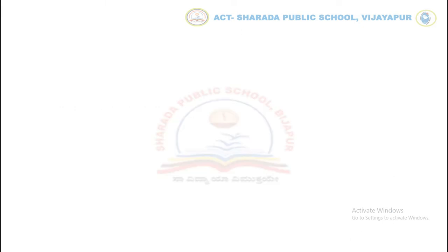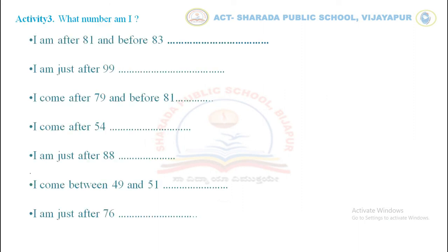Our next activity is reading: What number am I? Children, read the sentence carefully and guess the correct number. The first one: I am after 81 and before 83 — the number is 82. The second one: I am just after 99 — so the answer is 100. Dear children, read the further sentences and write the correct answer.